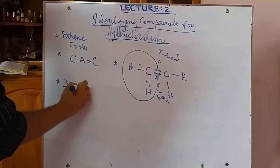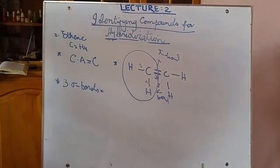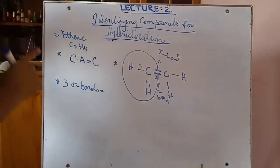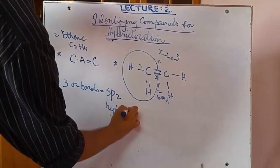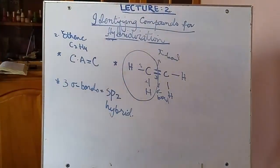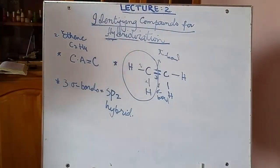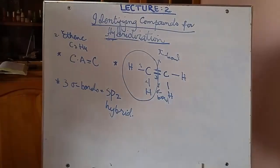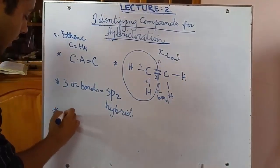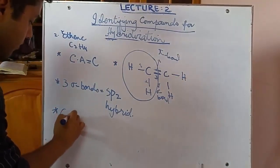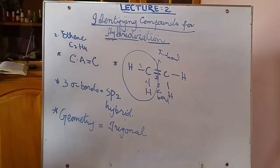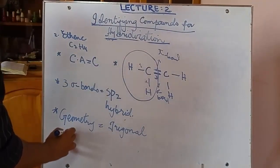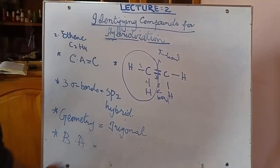Now count the sigma bonds. Since we have two central atoms, divide the structure into two equal halves and consider one — count only single covalent bonds: 1, 2, and 3. The double bond contributes only one sigma bond; the other is a pi bond, so we cannot count it. We have three sigma bonds. One less than three is two, so we have sp2 hybridization.